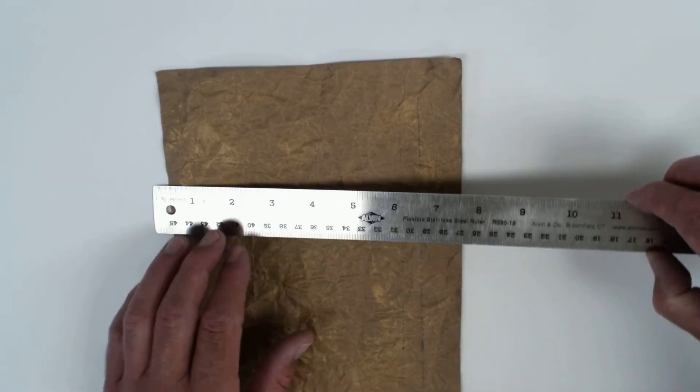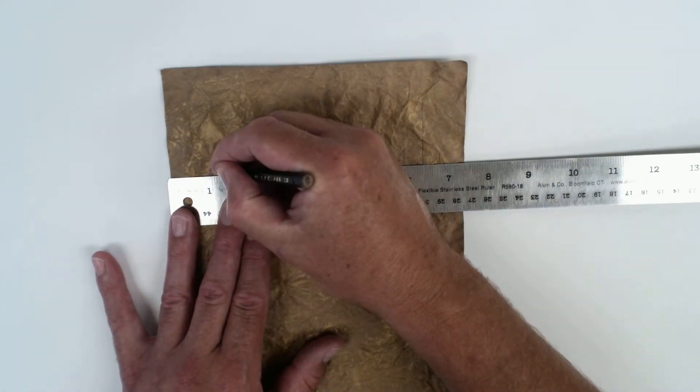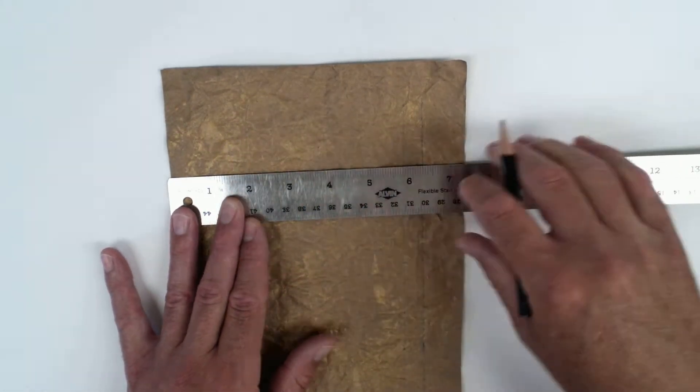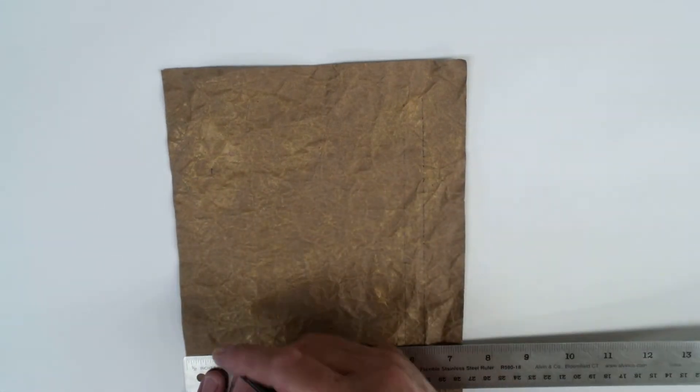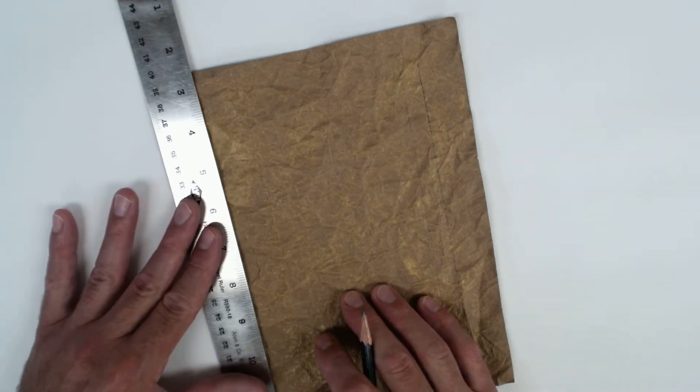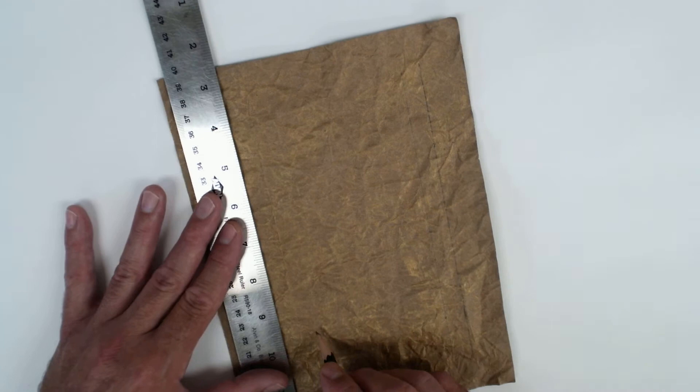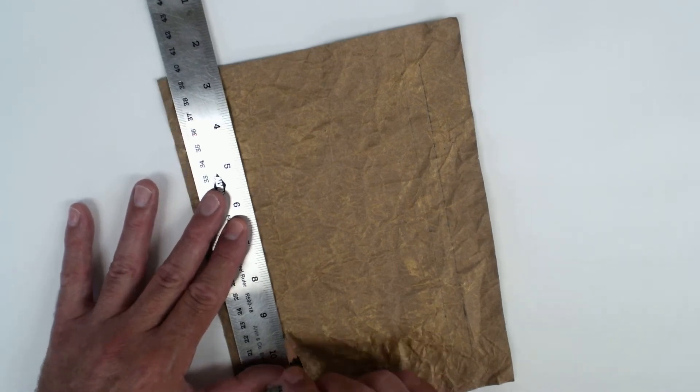So what's going to happen is this: taking your ruler right to the side, you want to measure over one inch and then an inch and a half. Slide the ruler down one inch, inch and a half, take those marks, straight edge of your ruler, match them up and you should be good to go.